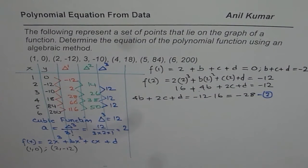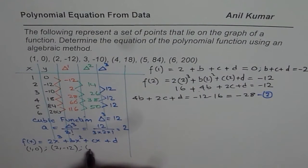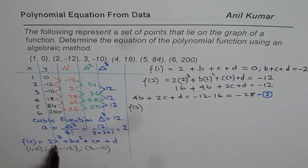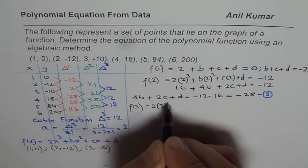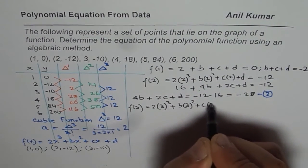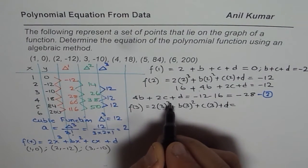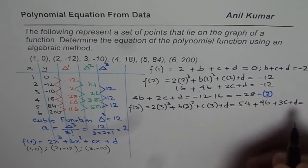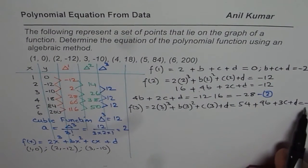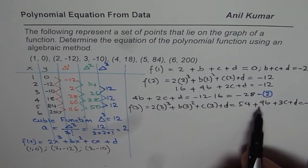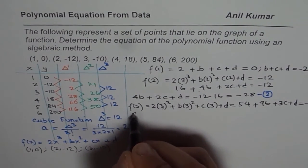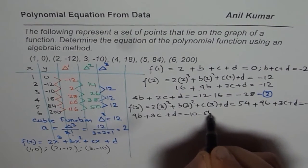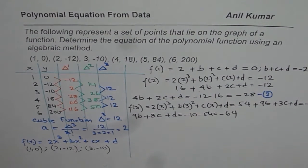Since we need to find 3 variables, we'll use a third point (3, -10). f(3) = 2(3³) + b(3²) + c(3) + d = -10. Since 3 cubed is 27 and 27 times 2 is 54, and 3 squared is 9, we get 54 + 9b + 3c + d = -10. Rearranging: 9b + 3c + d = -10 - 54 = -64. This is equation 3.